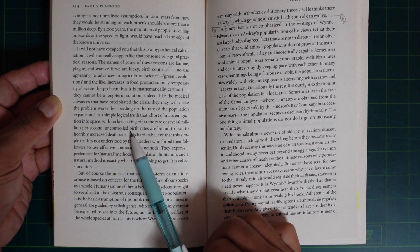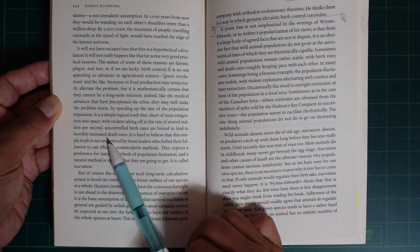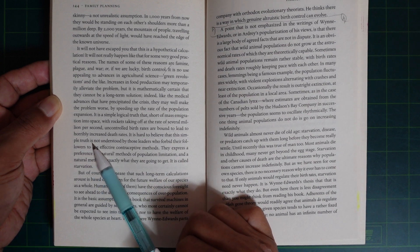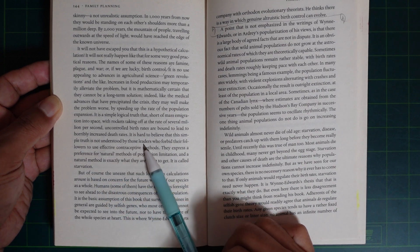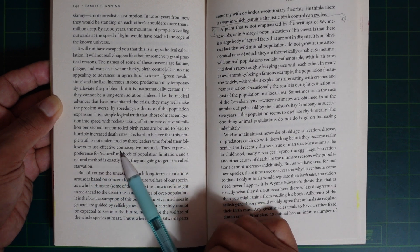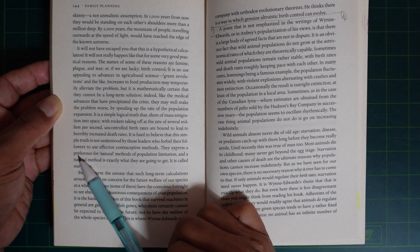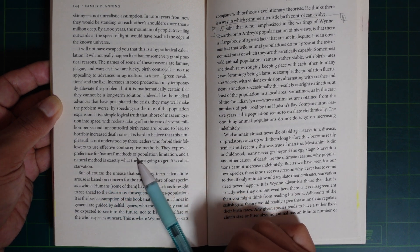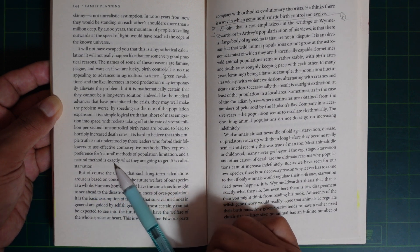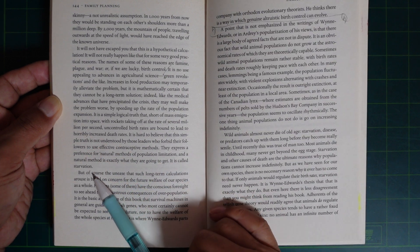It is a simple logical truth that short of mass emigration into space in rockets taking off at the rate of several million per second, uncontrolled birth rates are bound to lead to horribly increased death rates. It is hard to believe that this simple truth is not understood by those leaders who forbid their followers to use effective contraceptive methods. They express a preference for natural methods of population limitation, and natural methods is exactly what they are going to get. It is called starvation.